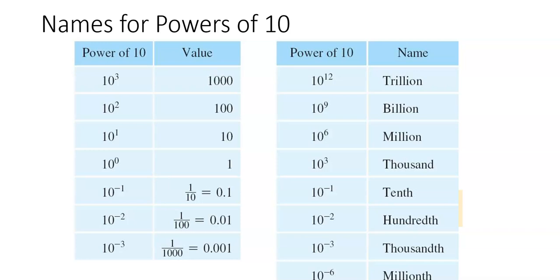This is the second part on negative exponents, and it is a study of scientific notation. This chart here has all different powers of 10 and what we call them. We operate in the base 10 system.